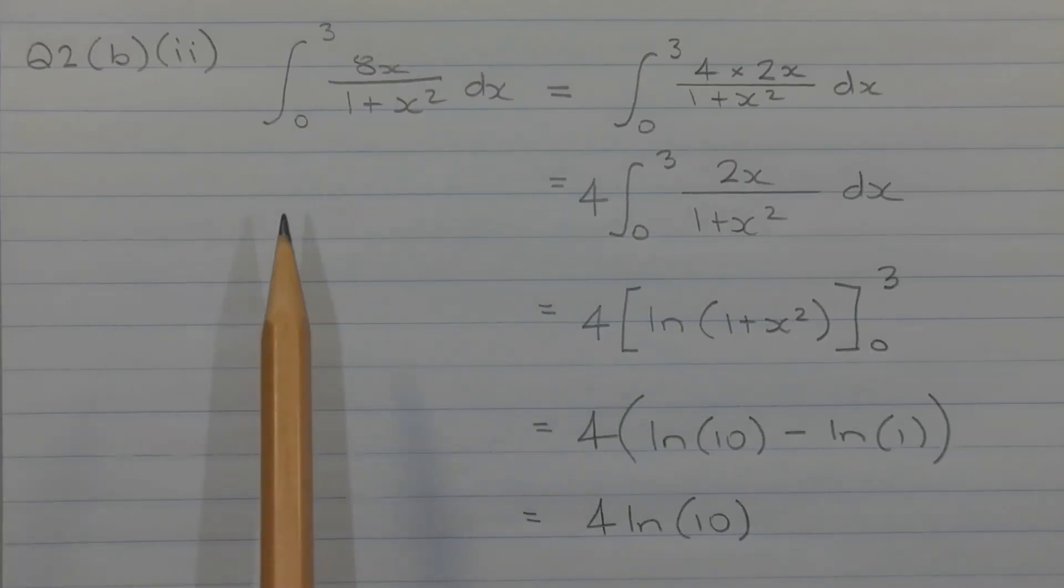By inspection we can see that the numerator is 4 times the derivative of the denominator. Now differentiating 1 plus x squared we get 2x. So if we had 2x in the numerator then the integrand would be in the form f dash of x over f of x and the integral will involve ln of f of x. So I'm going to rewrite the integrand so that it's in the form f dash of x over f of x and then I can proceed to perform the integration.